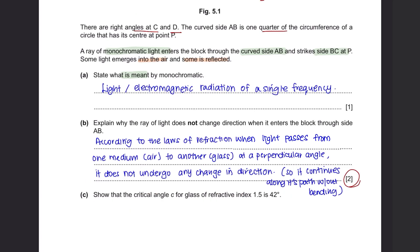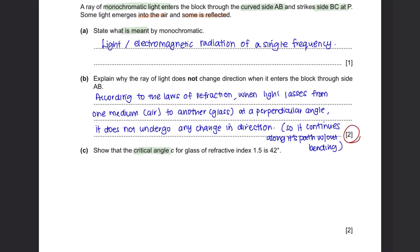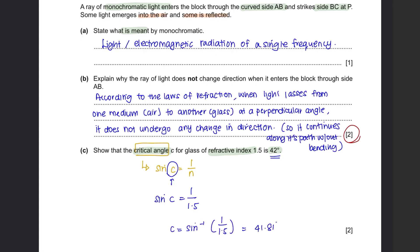Question C: Show that the critical angle C for glass of refractive index 1.5 is 42 degrees. We use the formula: sin C equals 1 over refractive index. Substituting the refractive index of 1.5 and calculating gives C equals 41.81 degrees, which is approximately 42 degrees. This proves that the critical angle for a refractive index of 1.5 is indeed 42 degrees.